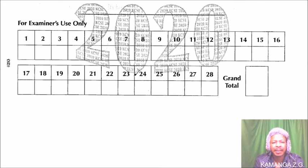The other part you see on the same page is this part where it is indicated 'For Examiner's Use Only.' This is the part where the examiner or the person marking your paper will put the marks you get in each question from number 1 up to number 28, and this is where they put the total.